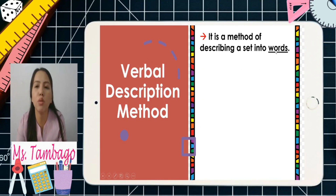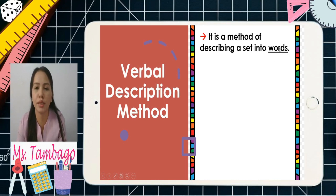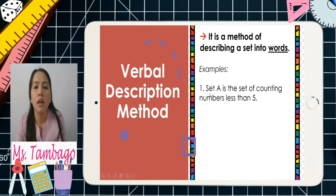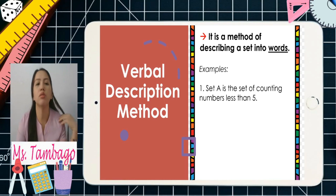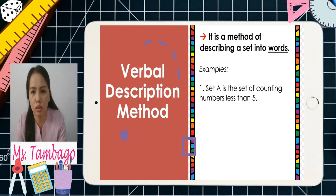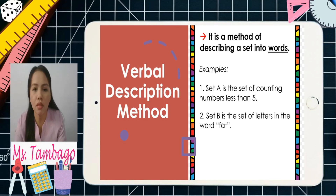It is a method of describing a set into words. For example, Set A is the set of counting numbers less than five. If we look back at the roster method example, we had the numbers one, two, three, and four — and in verbal description, we describe them using words: counting numbers less than five.